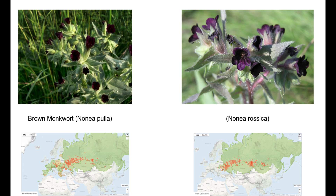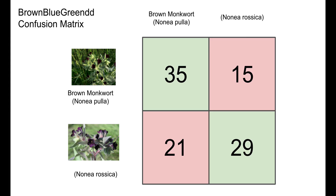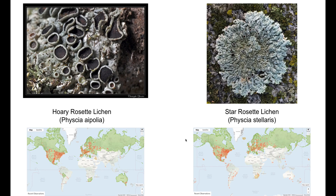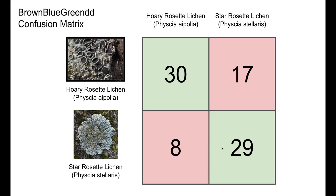Now we can investigate pairs of species that the top 10 teams struggled with the most. The first being a pair of plant species where we can see that ranges overlap significantly, so the extra location and date information probably didn't help disambiguate this pair. This is the confusion matrix from the top team for these two plants, and we can see significant confusion between the two. Another difficult pair were two lichen species, also with highly overlapping ranges, and again significant confusion was observed in the best team solution.